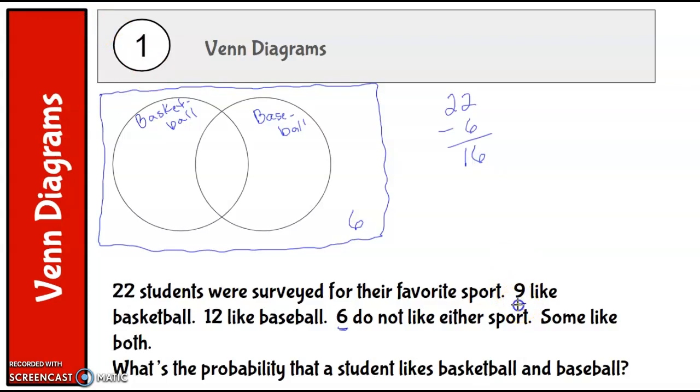Now we can see here that 9 like basketball and 12 like baseball. So if I add that together, that's actually 21. So there must be some overlap of students that were counted in both categories. There are some students that like basketball and baseball, and so they were counted twice. So you might say, well, it looks like there's 5.